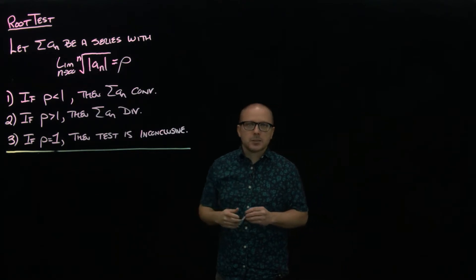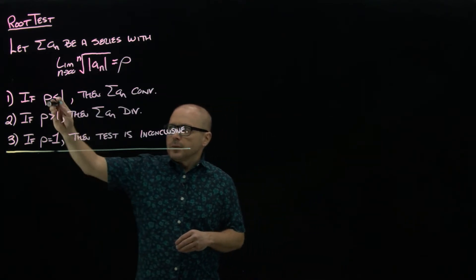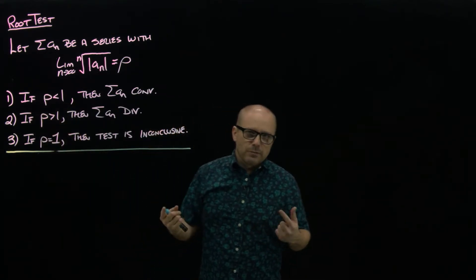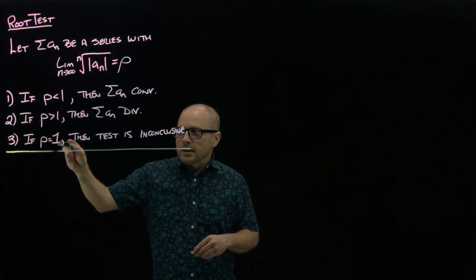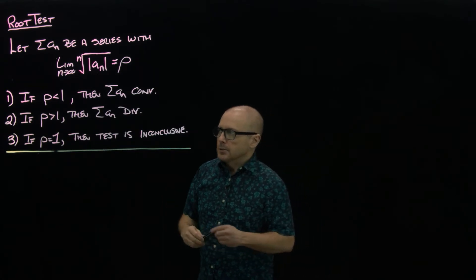So what I'd like to do is prove the first part. The second part is just the reverse, so I won't bother with that, and then I'll show us again how ρ equal to one is still inconclusive.